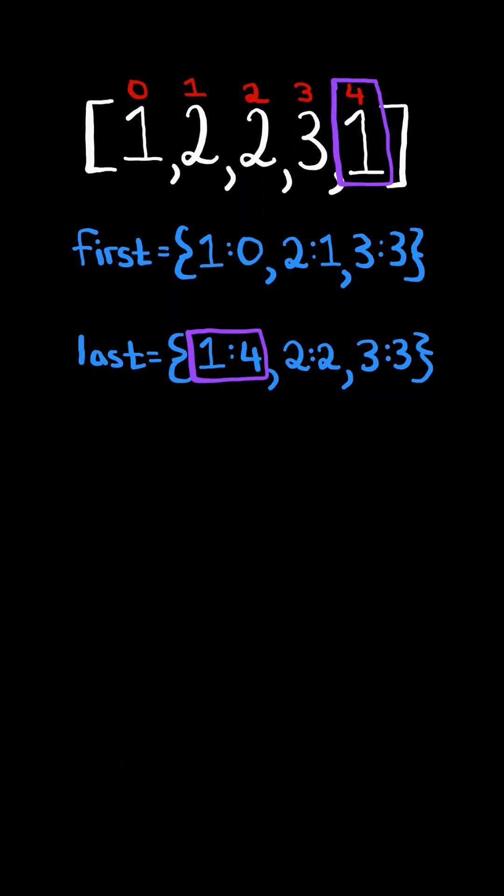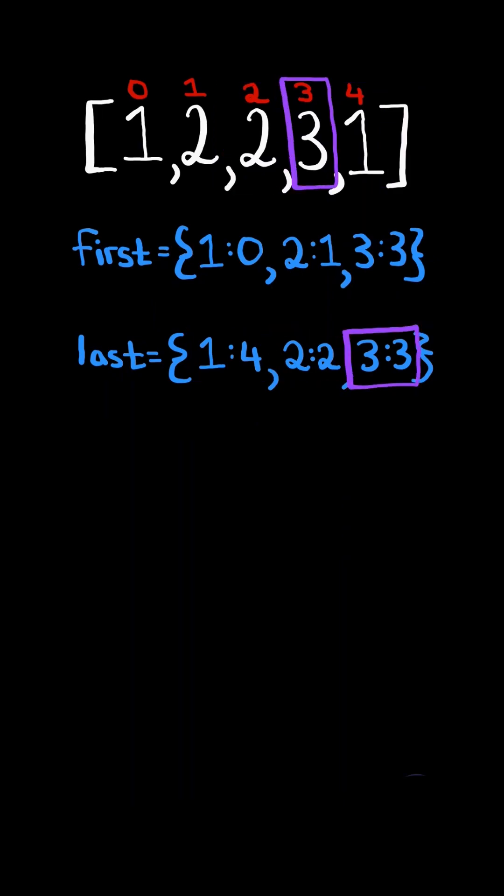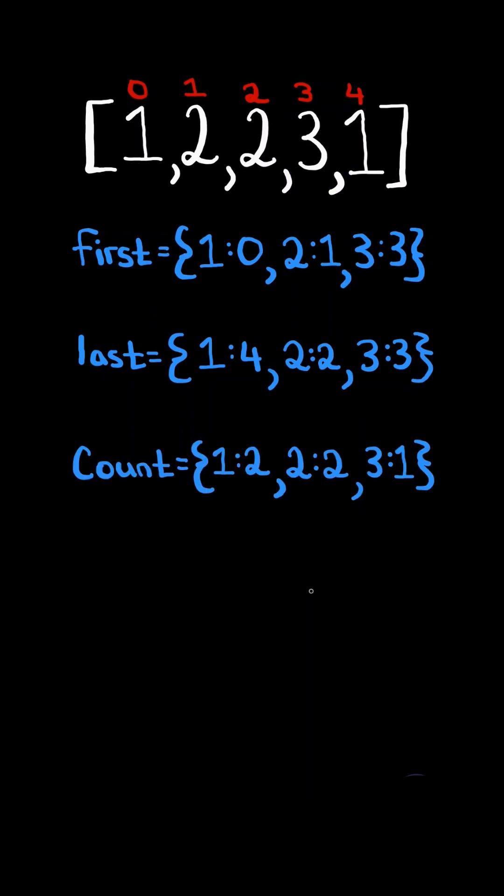For example, 1 last appeared at index 4, 2 last appeared at index 2, and 3 last appeared at index 3. And lastly, we will create another dictionary 'count' to keep track of the frequency of each number.